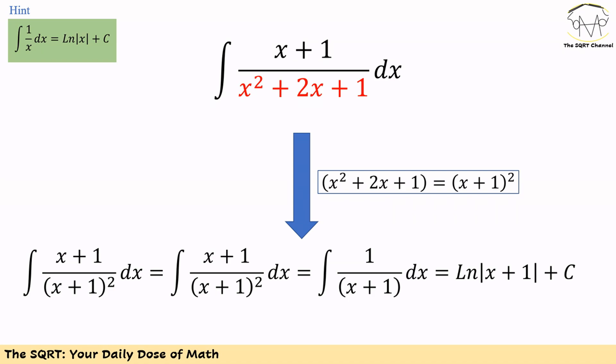If we replace the denominator with x plus 1 squared, we can cancel out one x plus 1 and then we will have the integral of 1 over x plus 1 dx. Now we are going to use the hint in the green box. Remember, the integral of dx over x is equal to ln of the absolute value of x plus c. So here the answer is going to be ln of absolute value of x plus 1 plus c.